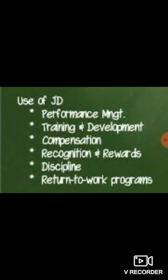The next HR function connected to job description is training and development. On one hand we have expected performance standards from the JD, and on the other hand we have the real-time performance of an employee. When we compare these at the end of the appraisal period, we find out whether the expected level was achieved or not. If not, we ask why the employee could not achieve the target or deliver the expected behavioral outcome.